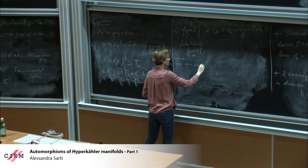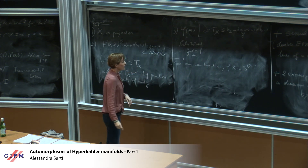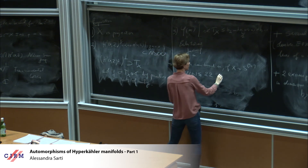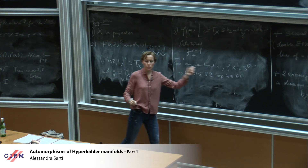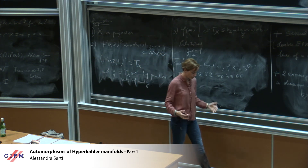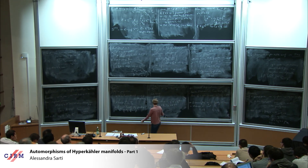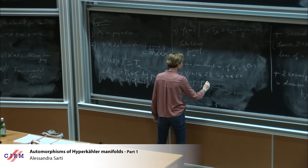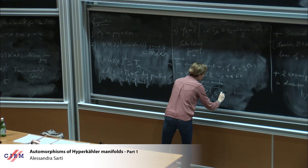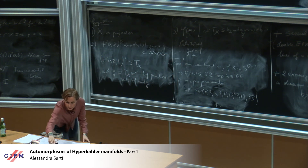For X of type S^[n], we have φ(M) ≤ 22, so M ≤ 66 — the same bound as for K3. But some new cases appear. If M = p is prime, then p belongs to {2, 3, 5, 7, 11, 13, 17, 19, 23}. The interesting new case compared to K3 is p = 23, since for K3 one only gets up to b_2 − 1 = 21, so p = 23 is not possible for K3 surfaces.